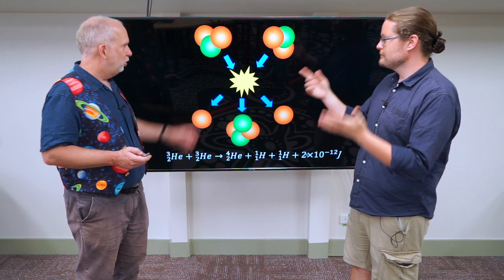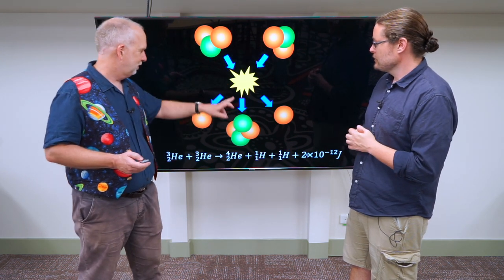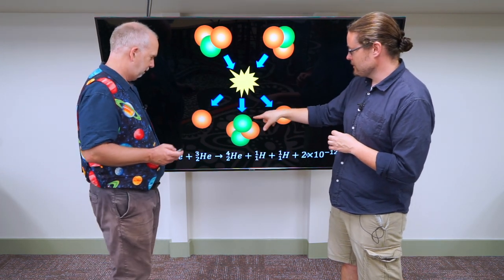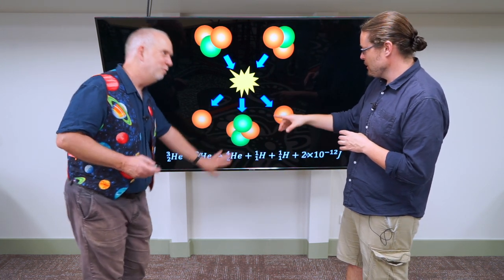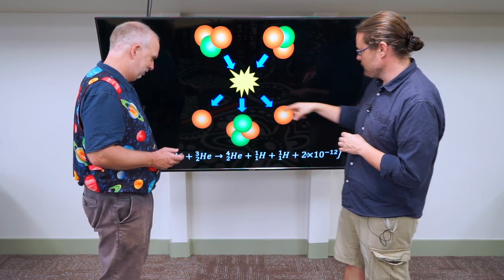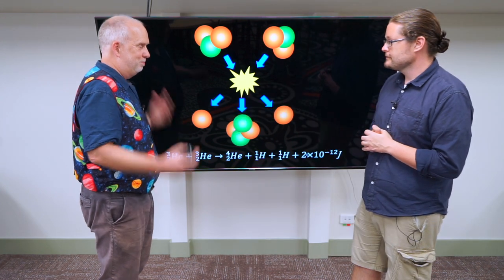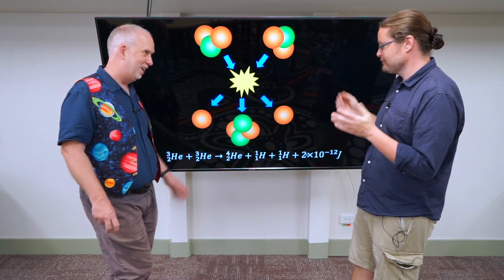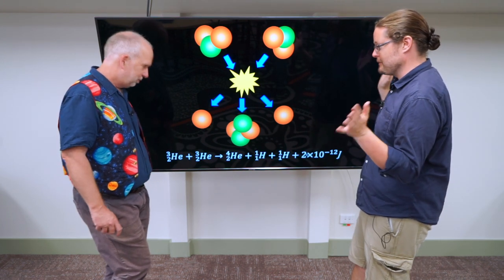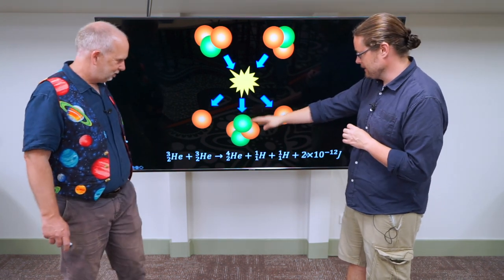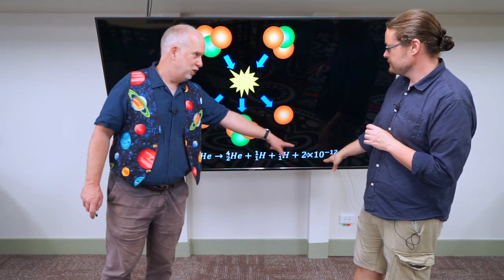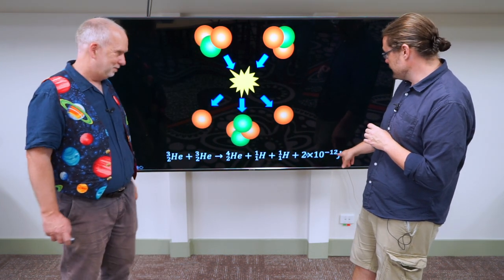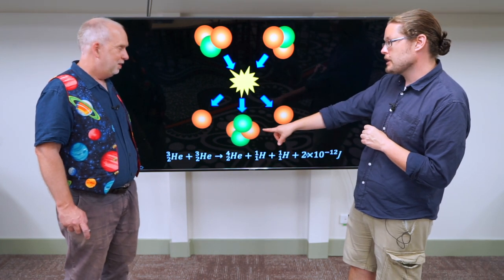And then you can combine two of these. So we get now two protons, two neutrons - that's normal helium, helium-4. But we also have two other protons coming out, which are hydrogen nuclei that will go off and join the rest of the hydrogen. We've created helium and we've created energy. This is actually where most energy comes out, this last stage - this is a lot bigger than the previous reactions.